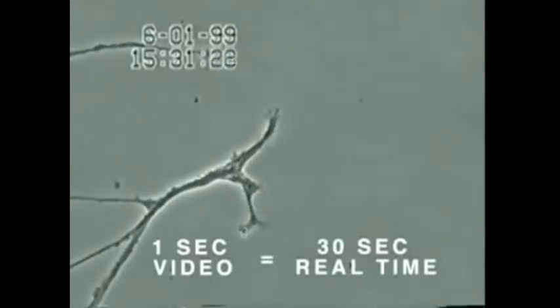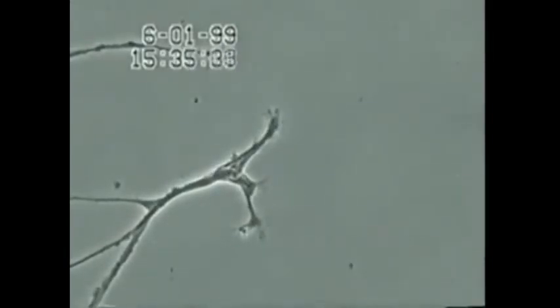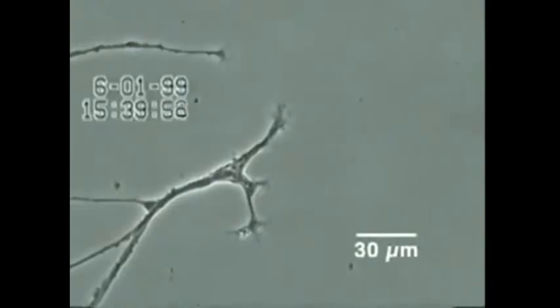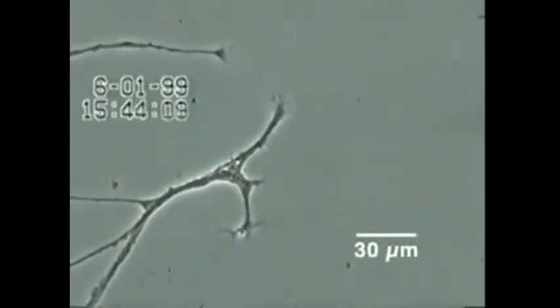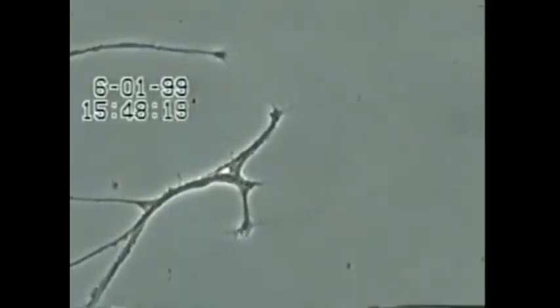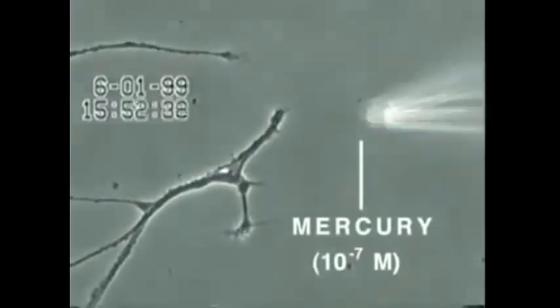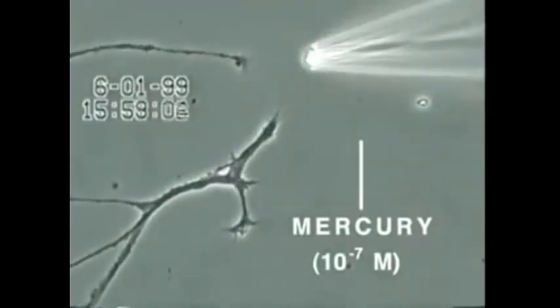In this experiment, neurons also isolated from snail brain tissue were grown in culture for several days, after which very low concentrations of mercury were added to the culture medium for 20 minutes. Over the next 30 minutes, the neurite membrane underwent rapid degeneration.